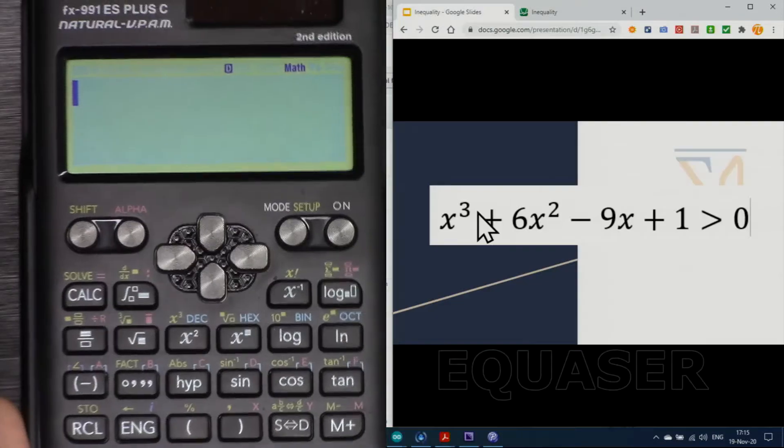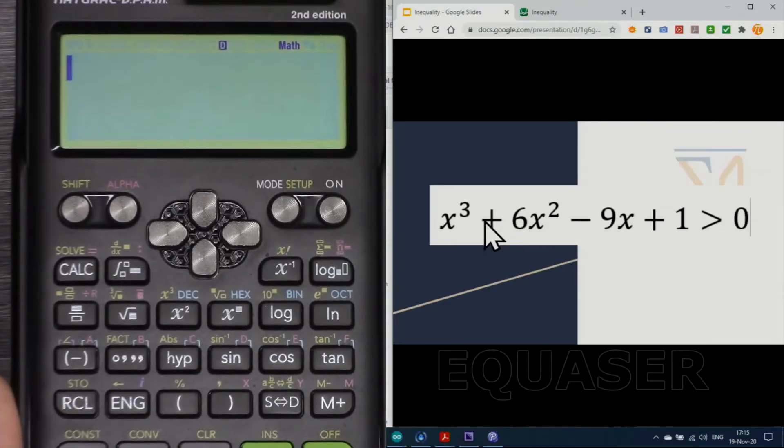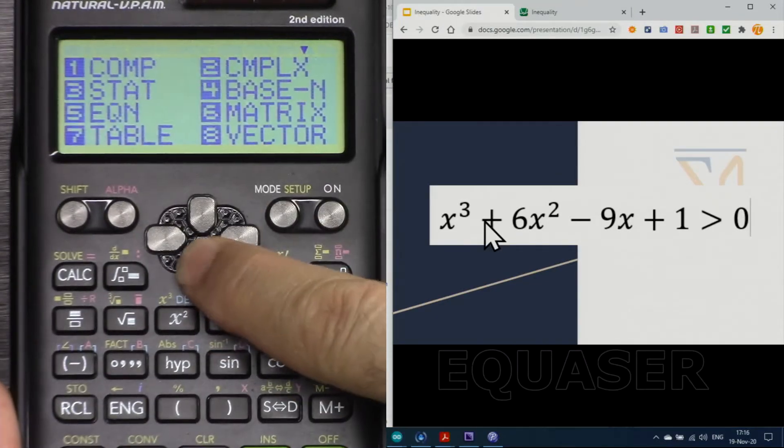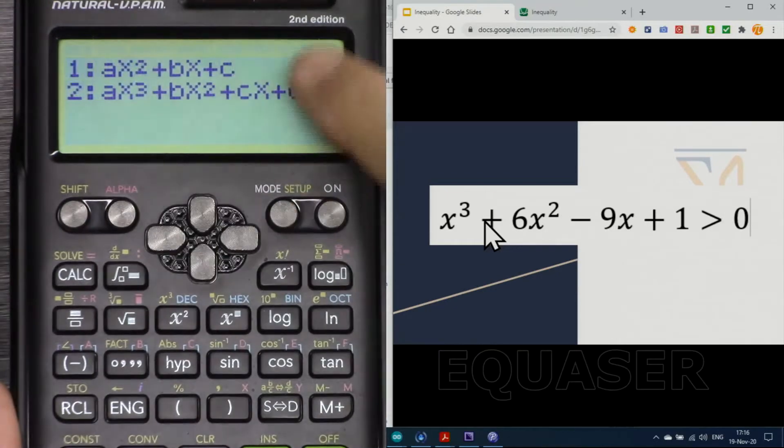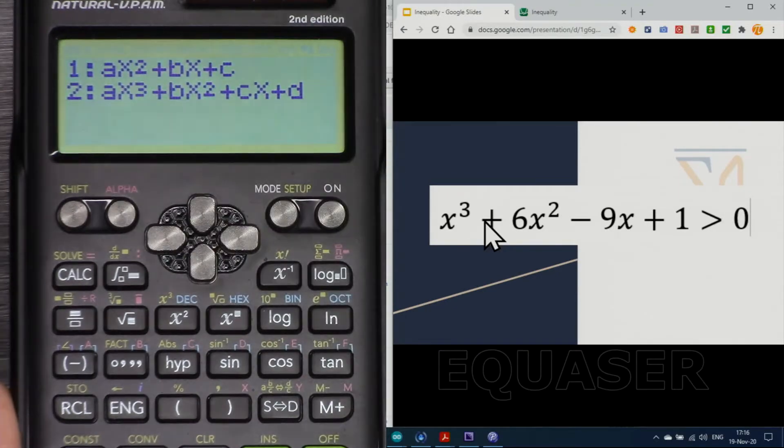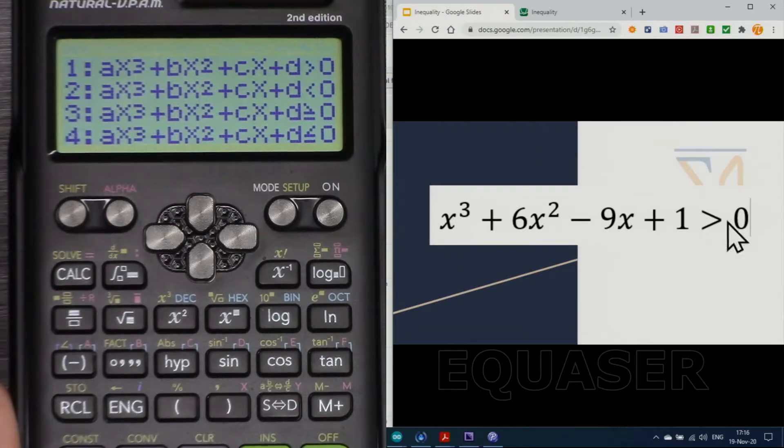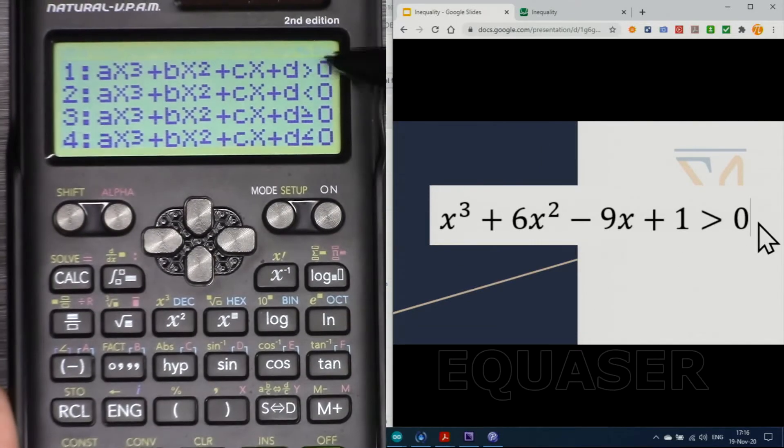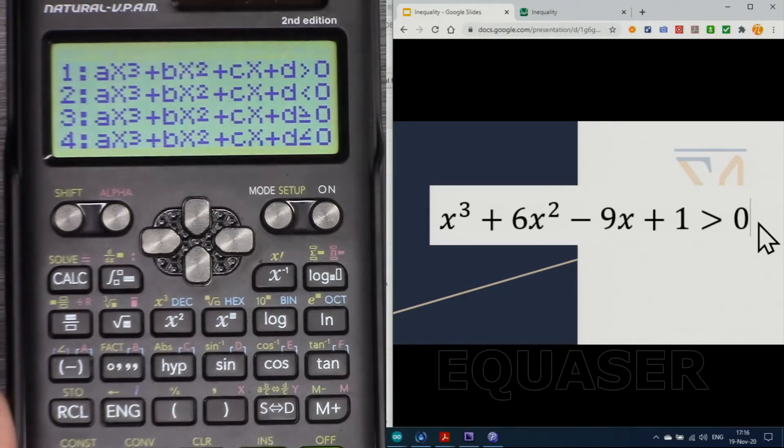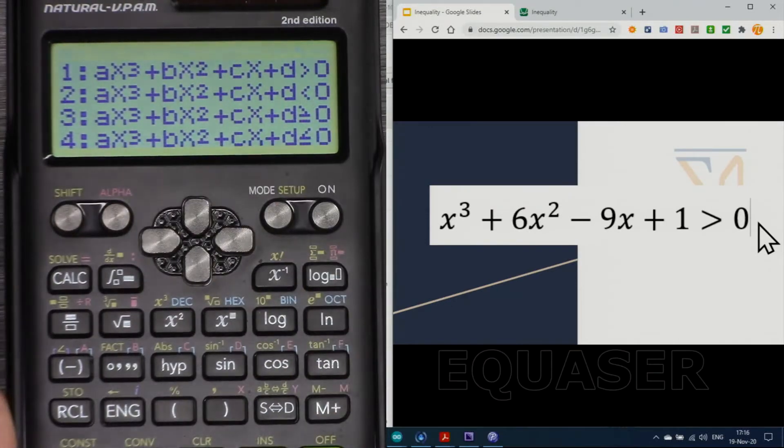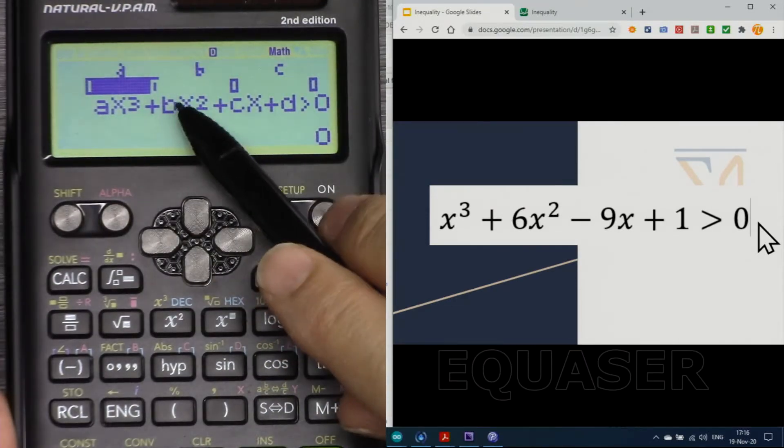Here, now let's do this cubic. So first go to the menu, press down, inequality, press 1, and then cubic, press 2. Now because we are doing the function f of x is greater than 0, we have to pick number 1, cubic greater than 0.